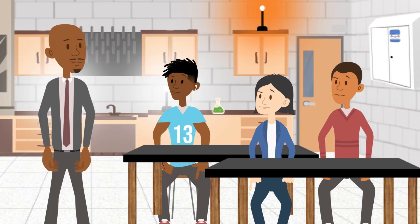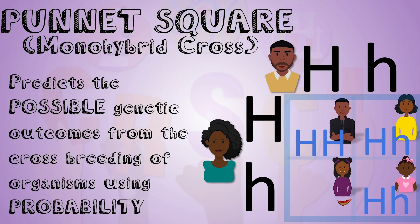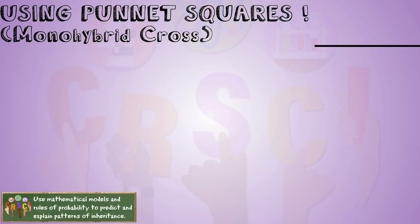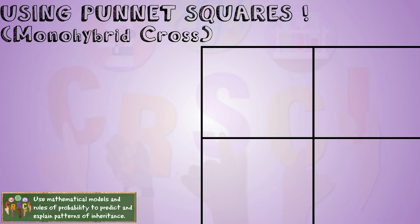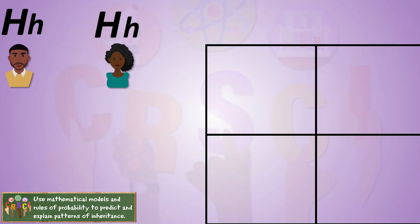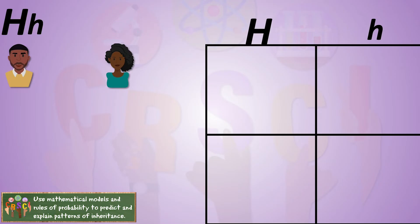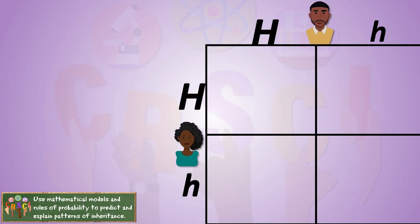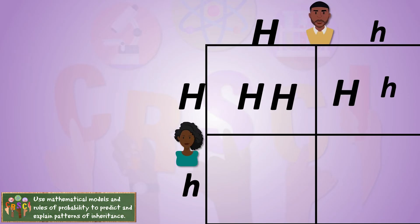There's no way to know which gamete will be present, but we can predict the probability of the outcomes. We can use a Punnett square, or monohybrid cross, to determine this. Make a box and divide it into four squares. We know their genotypes — they're both heterozygous — and we put the alleles for parent one at the top and the alleles for parent two on the side, then combine the possibilities.